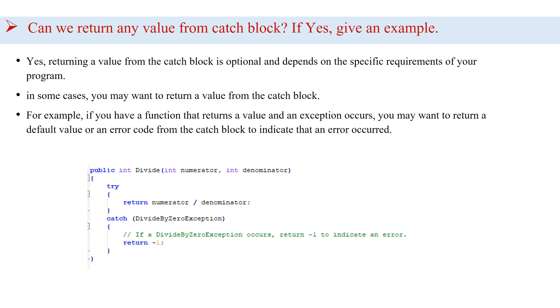In some cases, you may want to return a value from the catch block. For example, if you have a function that returns a value and an exception occurs, you may want to return a default value or an error code from the catch block to indicate that an error occurred.